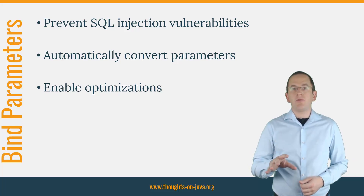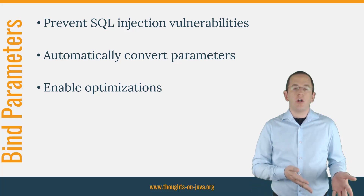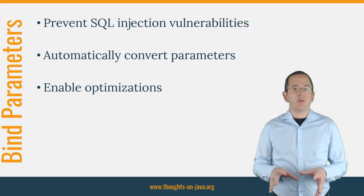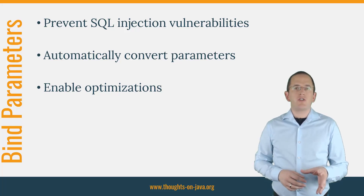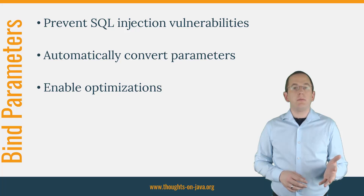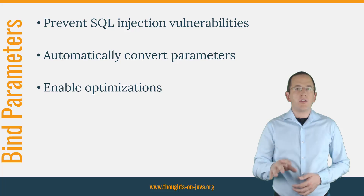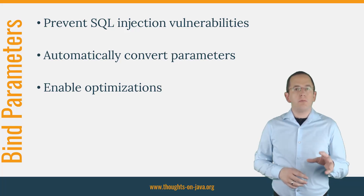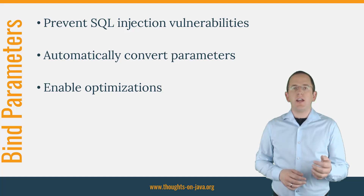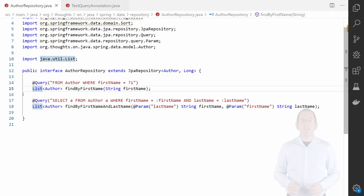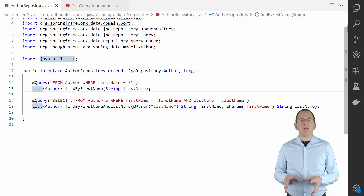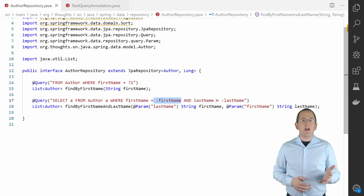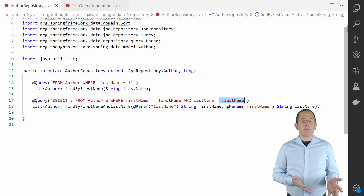Named bind parameters specify a name for each parameter. In your query, named bind parameters start with a colon followed by the name of the parameter. That makes them much more expressive and easier to reference. Spring Data JPA can provide the required code to set the values of these bind parameters, but it needs a little bit of help to match the method parameters with the bind parameters in your query. You either need to annotate the method parameter with @Param and specify the name of the parameter, or you need to compile your application with Java 8 or higher and set the compiler flag -parameters. Here you can see an example of both bind parameter types.